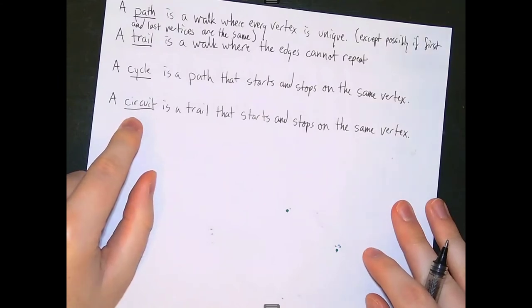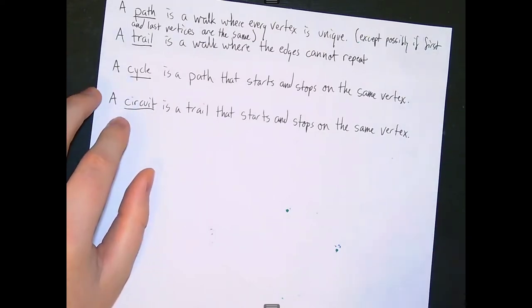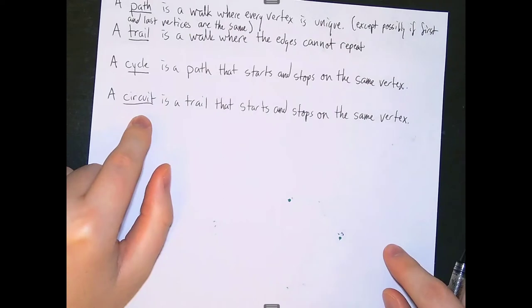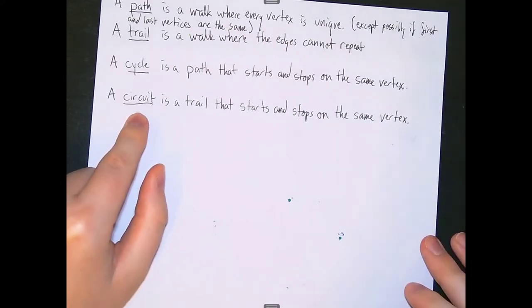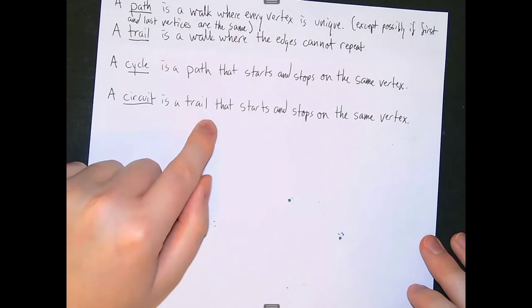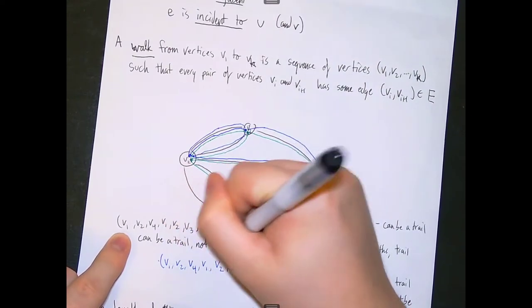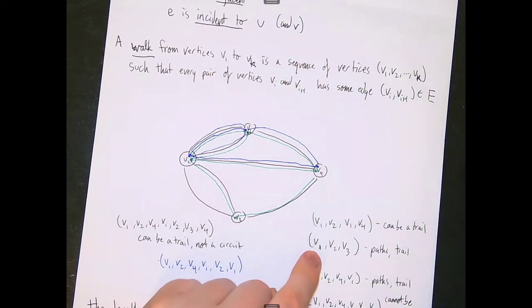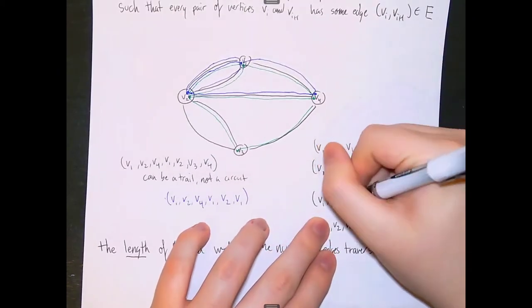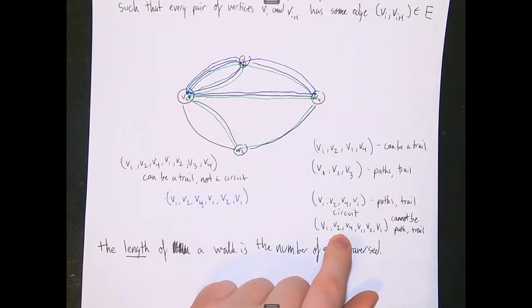Lastly, we have a circuit. A circuit is a trail that starts and stops on the same vertex. It can be a little confusing to differentiate between a cycle and a circuit — sometimes even top-level graph theorists will say cycle when they mean circuit. A cycle cannot repeat edges because it's also a path. A circuit is specifically a trail that starts and stops on the same vertex, so repeated vertices are allowed as long as no edges repeat.